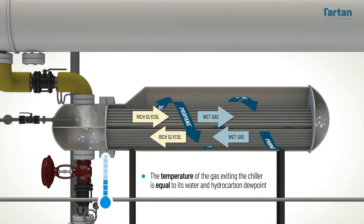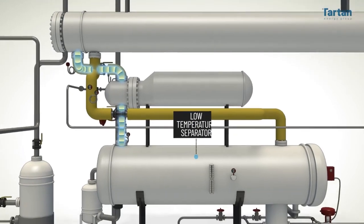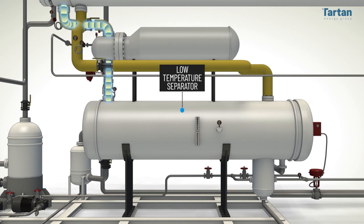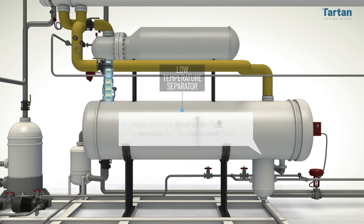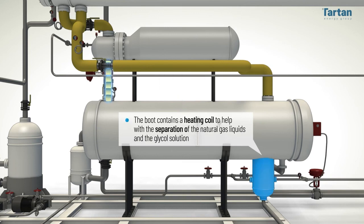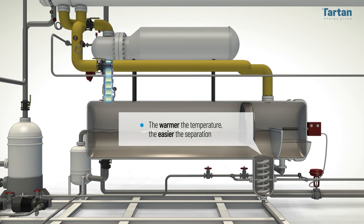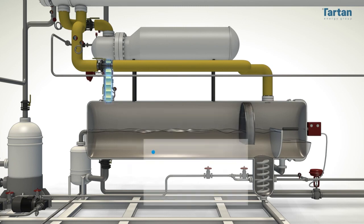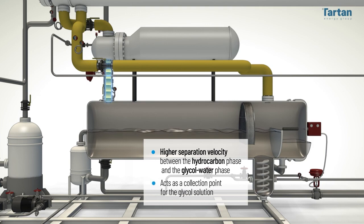Theoretically, the temperature of the gas exiting the chiller is equal to its water and hydrocarbon dew point. Downstream from the propane chiller is the low-temperature separator, or LTS, the vessel where the glycol water phase is separated from the hydrocarbon phase. There is a boot below the LTS, which typically contains a heating coil to help with the separation of the natural gas liquids and the glycol solution. The warmer the temperature, the easier the separation. The boot allows for higher separation velocity between the hydrocarbon phase and the glycol water phase and acts as a collection point for the glycol solution.